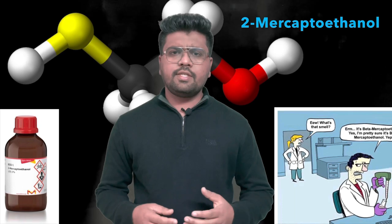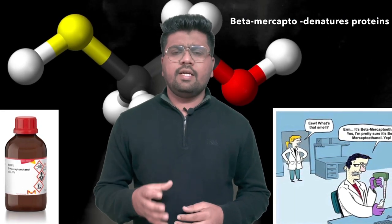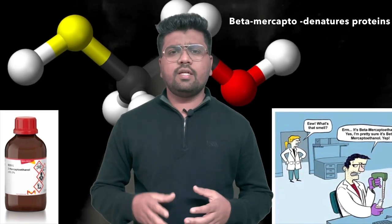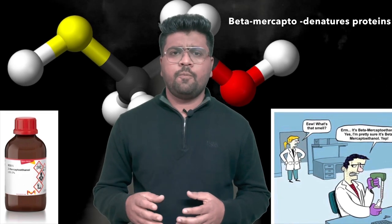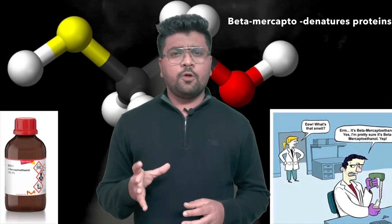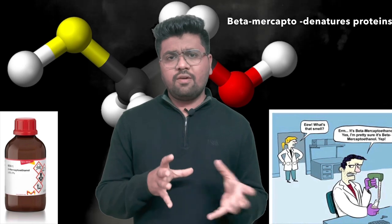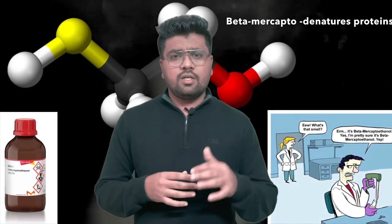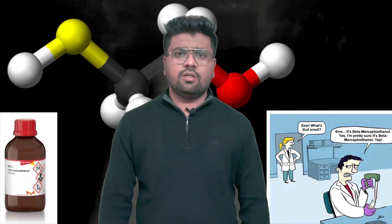Next is Beta-Mercaptoethanol. It is added in the extraction buffer to remove tannins and other polyphenols. Also, beta-mercaptoethanol reduces the disulfide bonds of proteins, and thus the protein gets denatured.